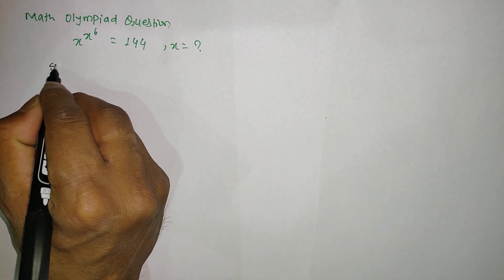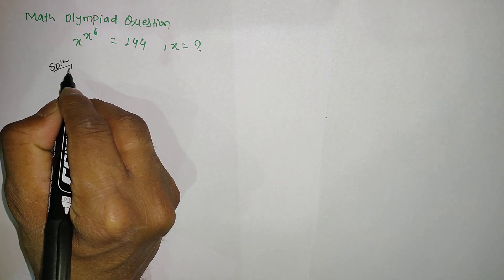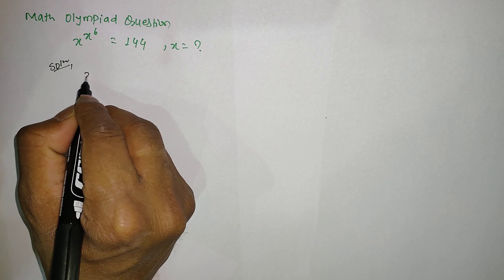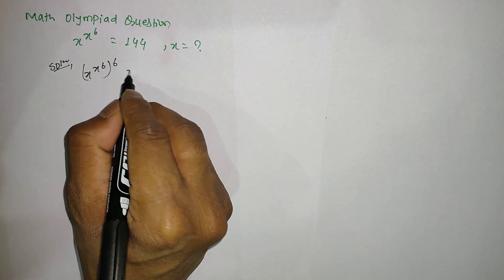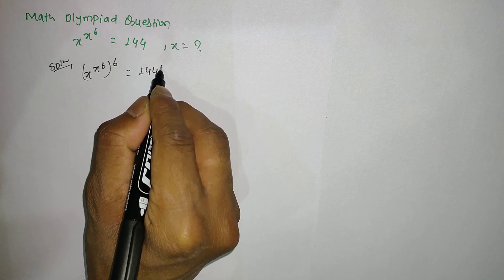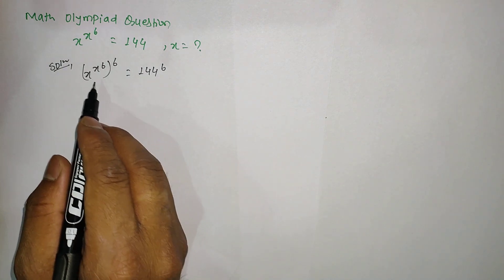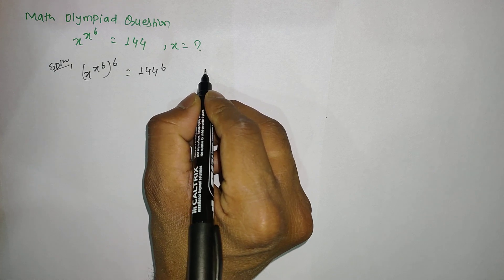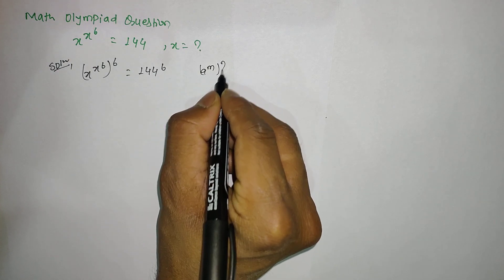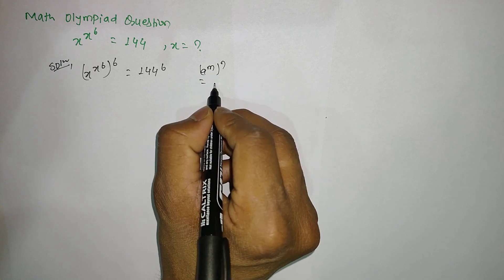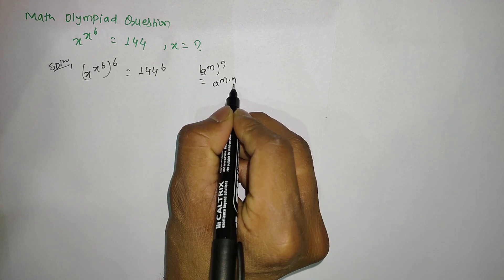So let's get into the question and find the solution. Here I am going to raise both sides to the power 6, so 144 to the power 6. We can see that according to the power rule, a to the power m to the power n, you can multiply the exponents: a to the power m times n.